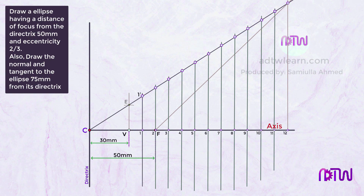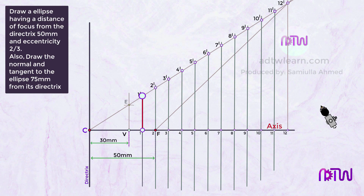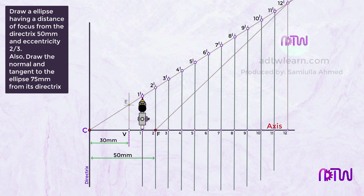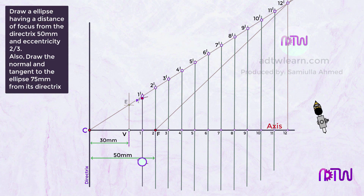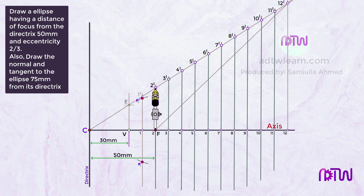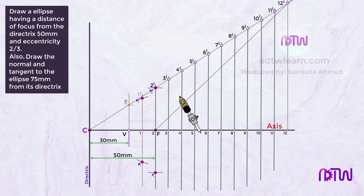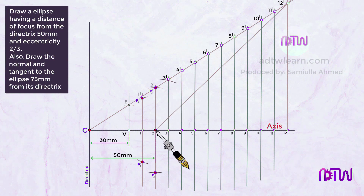Mark the intersection points of the vertical lines with the inclined line as 1', 2', 3' and so on up to 12'. Then take a compass, set it to the length from point 1 to 1', and using F as the center, cut arcs on both sides of the vertical line through point 1. Mark these as P1' and P1. Similarly, take length 2 to 2', use F as center, cut arcs on the vertical line through point 2, and mark them P2' and P2. Repeat for point 3 to get P3' and P3.